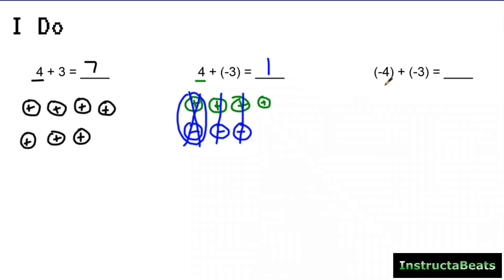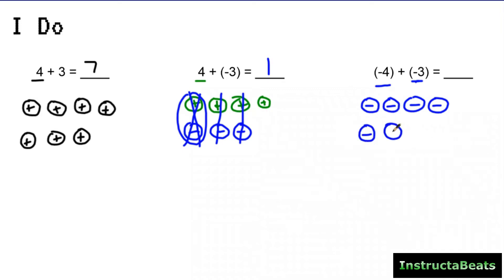Now I'm starting with four negative charges, or four negative counters, and I'm adding a negative three, so I need to add three more negative charges underneath. Next I check: can I cancel anything out, can I make any zero pairs? I don't have any positive and negative — they're all negative — so I can't cancel anything out. I count them all up: one, two, three, four, five, six, seven. So negative four plus negative three would be negative seven.